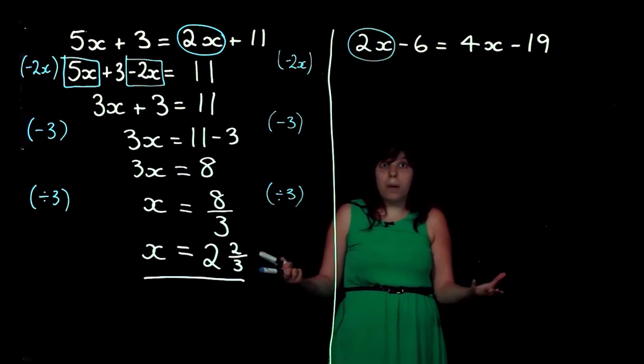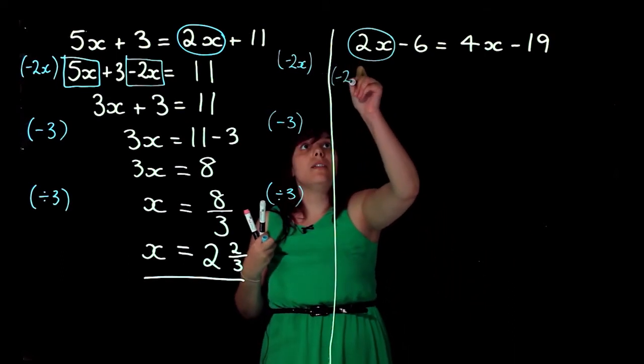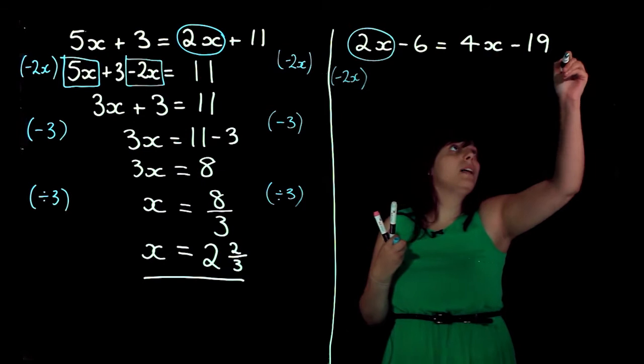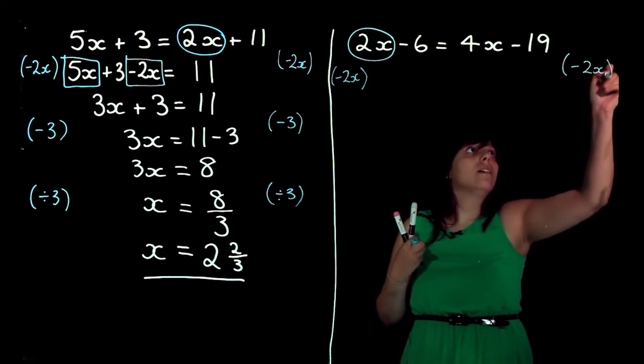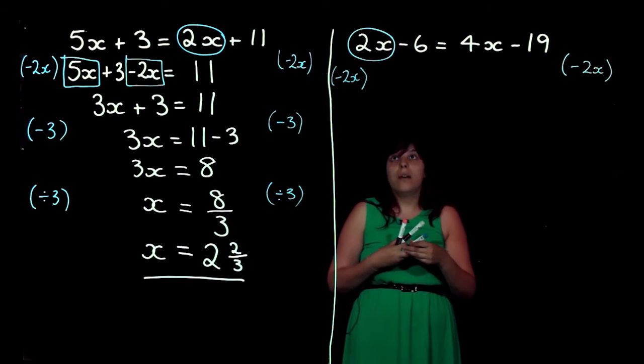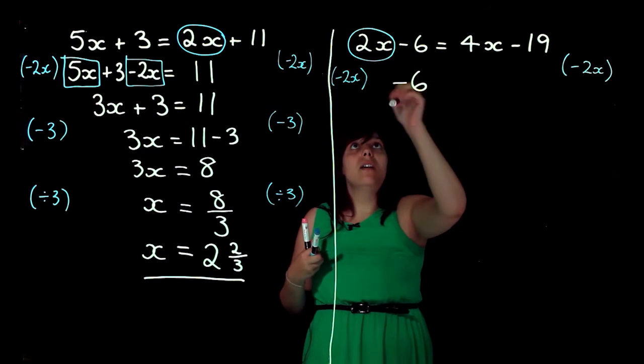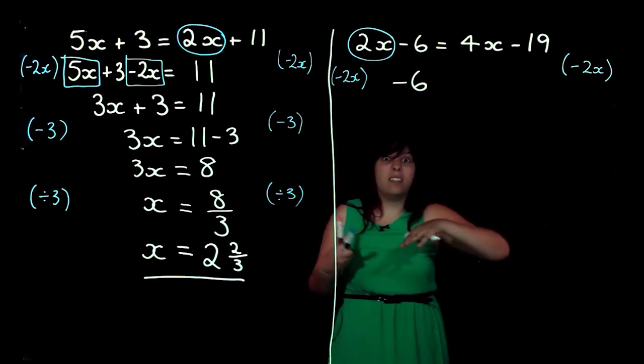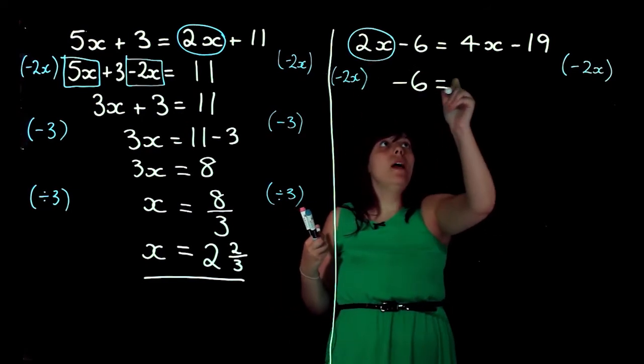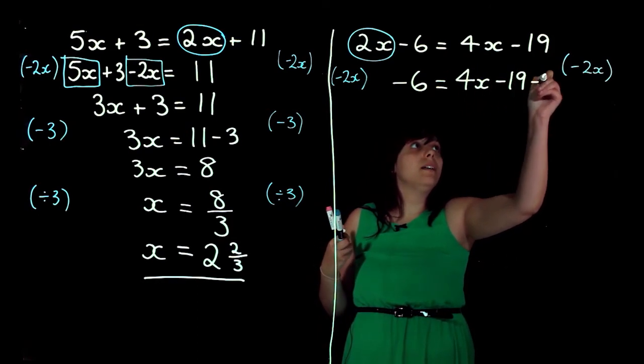So, how do I get rid of my positive 2x? Well, I subtract 2x, and I'm going to do that from both sides to keep my equations balanced. So, 2x minus 6 minus 2x is just going to be minus 6, because 2x minus 2x is just 0, which is what we wanted.